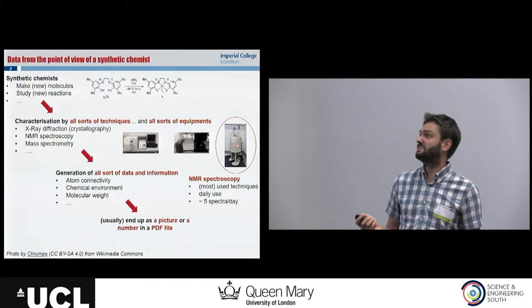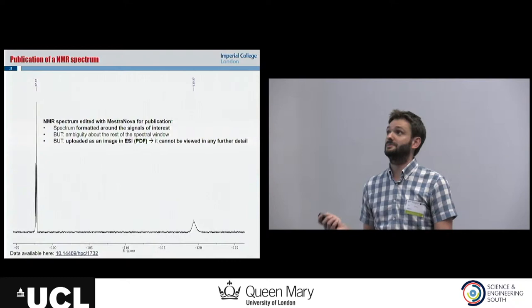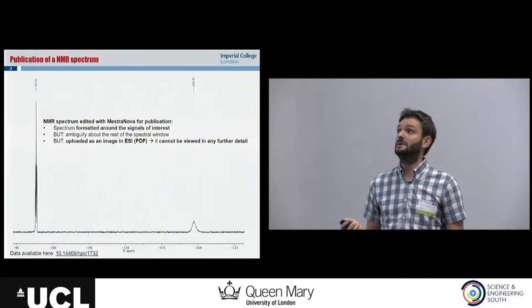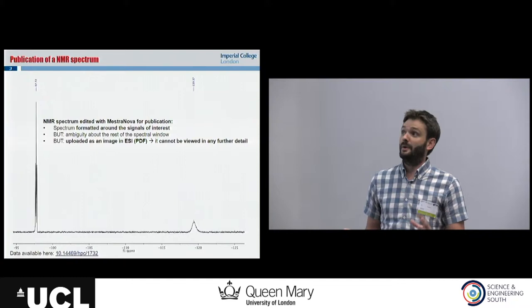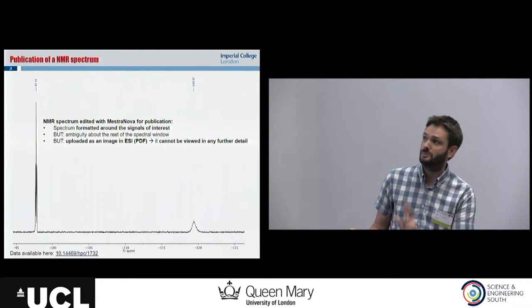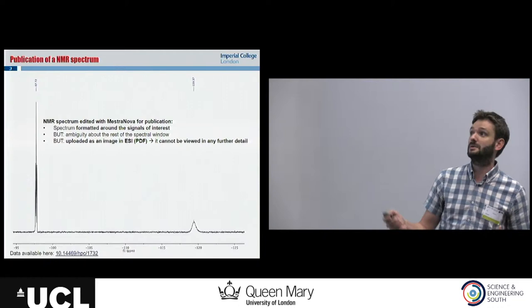This is an example of an NMR spectrum edited with a specific software — in that case it's MNova — and it's published as a picture in the manuscript. Usually the spectrum is formatted around the signal of interest. Here we can see like 3p, looks like a fork, a small bump here, but that leaves ambiguity about the rest of the spectral window.